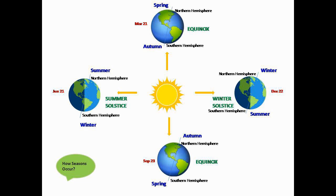There are two solstices each year — one in June and one in December. The time of solstice is the same all over the planet, but the season depends on where you are on Earth — either in the Northern Hemisphere or in the Southern Hemisphere.